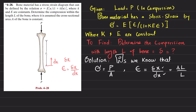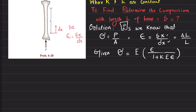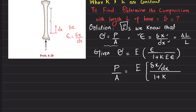We have been given the stress-strain relation: sigma equals E times epsilon divided by 1 plus k times E times epsilon. We substitute sigma equals P over A, so P over A equals E times (delta x over dx) divided by 1 plus k times E times (delta x over dx).